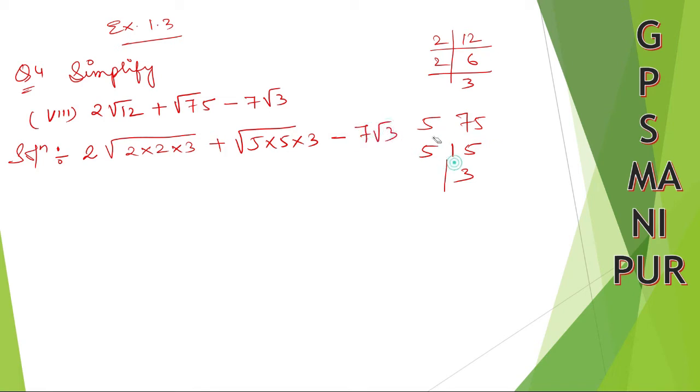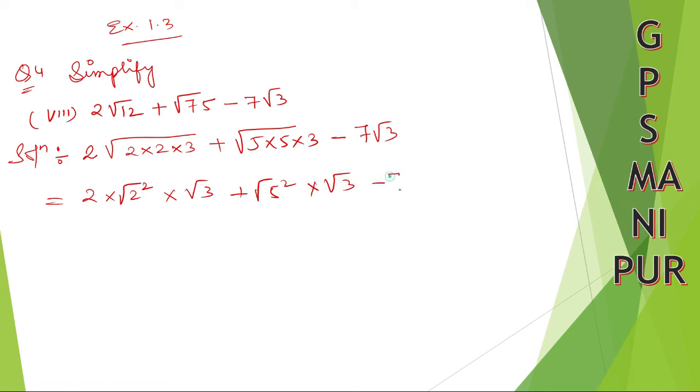So 2×2, 2×2 is 2², so √(2²×3). Here same 5×5 is 5², so √(5²×3) - 7√3. I hope you understood this much. Square and root cancel, square and root cancel.